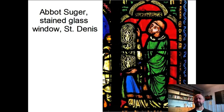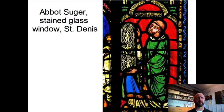Here we see Abbot Suger donating a stained glass window — he's holding it in his hand. This is what we know as an expiatory offering. Expiatory means to expiate one's sins — to wipe away or cleanse oneself. Various forms of creating art or donating art to a church were understood as good acts for Catholics and thus put one in higher standing in God's eye. So Suger is making sure we all know that he is doing this for the greater benefit of humanity in respect to his own theology about Christianity.